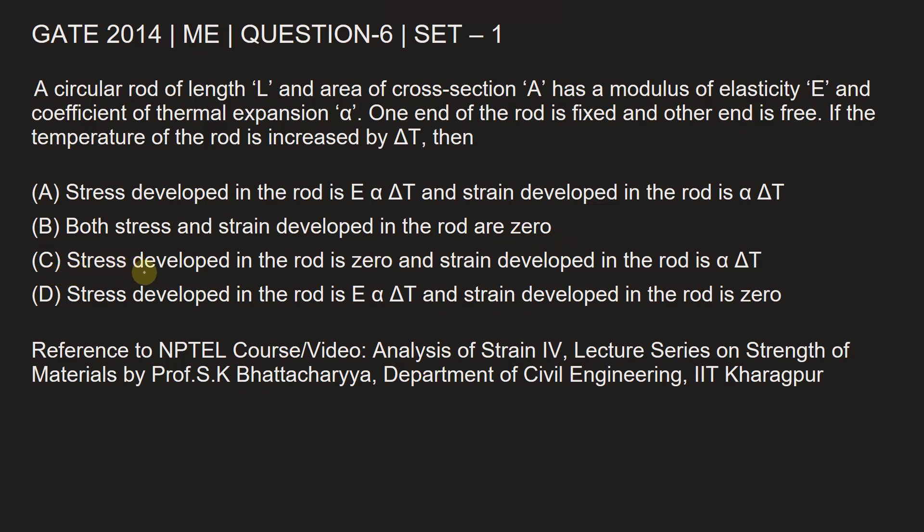Option C is stress developed in the rod is zero and strain developed in the rod is alpha times delta T. And option D is stress developed in the rod is E times alpha times delta T and strain developed in the rod is zero.